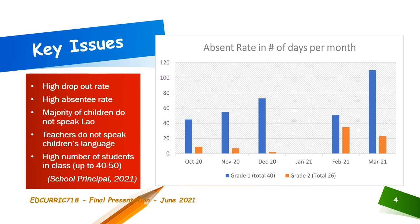Some of the key issues we discovered during our discussions with the school principal and teachers include high dropout rates, high absenteeism of children especially in grade one and grade two, and the majority of children do not speak Lao and were not prepared for entering school. Teachers do not speak the children's language, and the number of students per class in grade one and grade two is relatively high. The graphs show the trends of student absenteeism during this period.